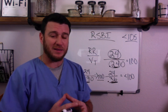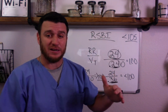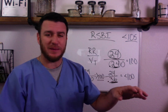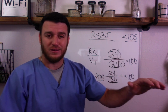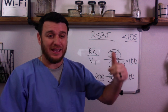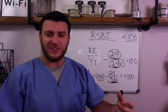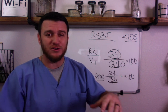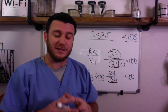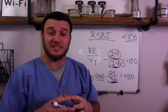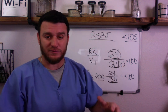You can quickly assess RSBI just by comparing your rate to the first two numbers of your spontaneous tidal volume. Never calculate RSBI when your patient is on ACVC — it doesn't matter. You have a set tidal volume and a set rate, so RSBI is not relevant. You only calculate RSBI when assessing spontaneous rate to spontaneous tidal volume.